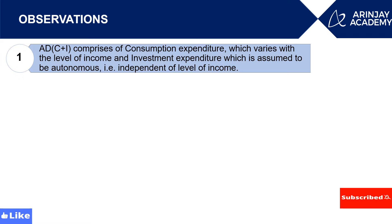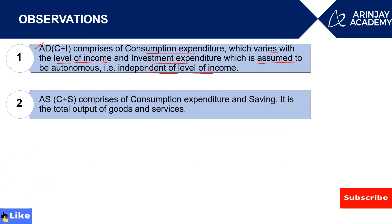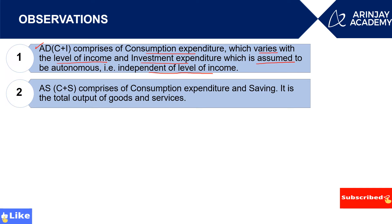The AD curve comprises consumption expenditure and investment expenditure. Consumption expenditure varies with the level of income — as income increases, consumption expenditure also increases. Investment expenditure is constant because investment is autonomous and independent of the level of income. The AS curve comprises consumption expenditure and savings, and it depicts how much goods and services are being produced by the economy.